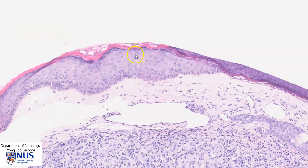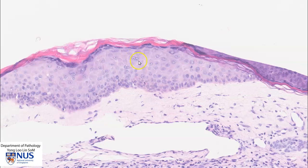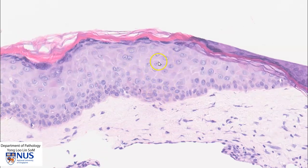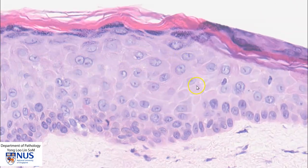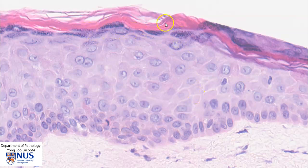Taking a closer look at the epidermis, this is composed of stratified squamous epithelium. We can see the basal layer, the stratified epithelium, and we can also see that there is a granular layer, and this is the keratinized layer, or the stratum corneum.